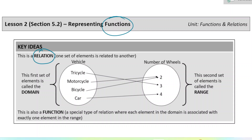Here we're going to use some actual objects so we can get a better sense of what it means to relate different things. We have vehicles and number of wheels. The first set of objects is often called the input, and then the second set is sometimes called the output. If we're using variables to represent these, often this is represented with X and this is represented with Y.